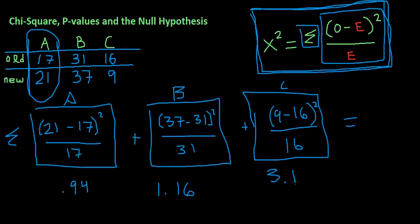So then 3.1 plus 1.16 plus .94, you're gonna have, and this is your chi-squared value of 5.2. Getting a little dyslexic in trying to say this, but your chi-squared value, remember that this x squared actually doesn't mean x squared, this is just a symbol for chi-squared. This is your chi-squared value.